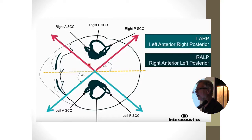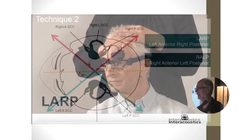And that's called LARP, L-A-R-P. That is in order to test the left anterior and the right posterior semicircular canal. And then when you do it with the head turned in the opposite direction, it's called RALP. You're testing the right anterior and the left posterior canal. So in all, you've ended up testing all six canals.